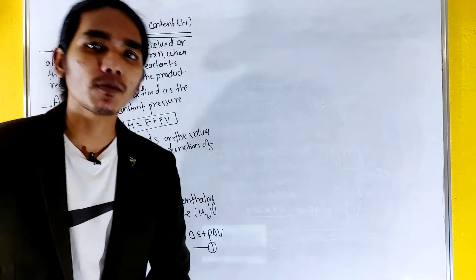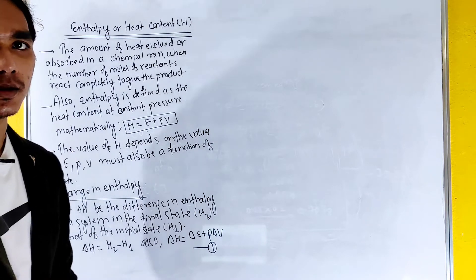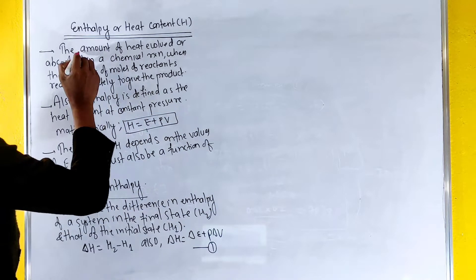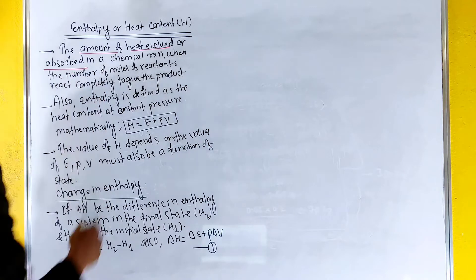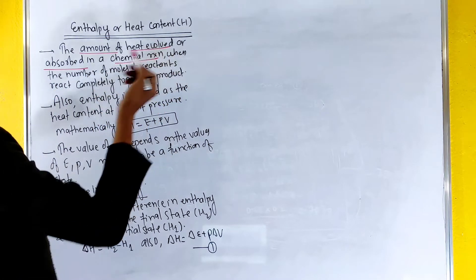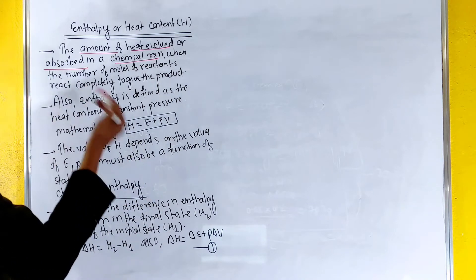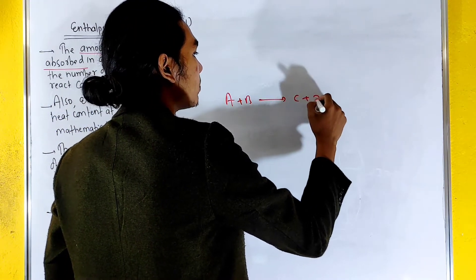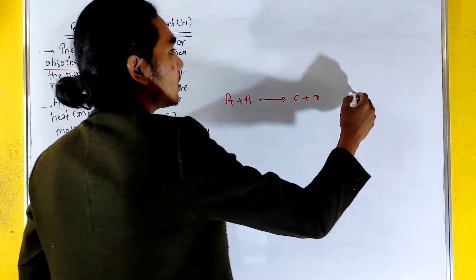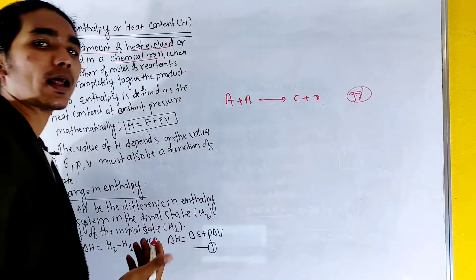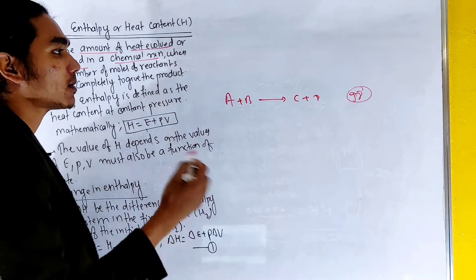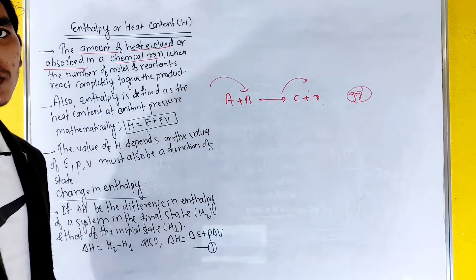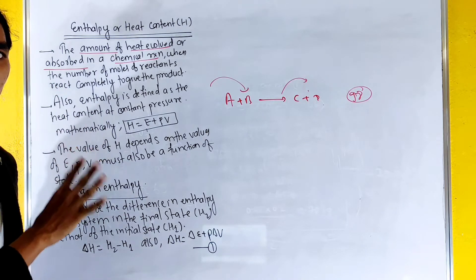We are going to talk about enthalpy, or heat content of the system. The definition of enthalpy is the amount of heat evolved or absorbed in a chemical reaction when the number of moles of reactants react completely to give the product. For example, A + B gives C + D with a heat value of 98. This is the enthalpy or heat content of the system.